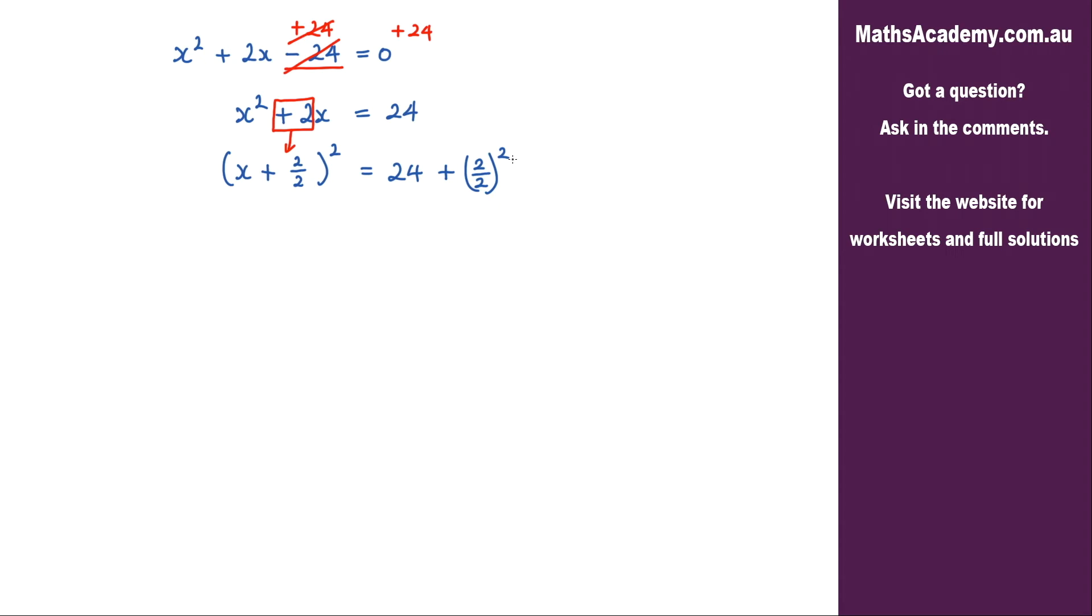Let's simplify things here. Okay so what we've got is x plus 2 divided by 2 is 1. So x plus 1 squared is equal to 24 plus, 2 divided by 2 is 1 and 1 squared is just 1. So x plus 1 squared is equal to 25.